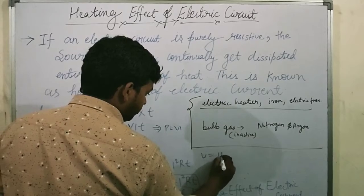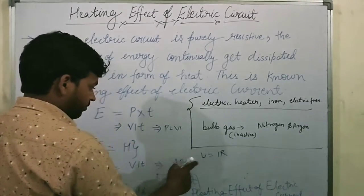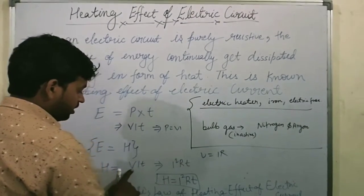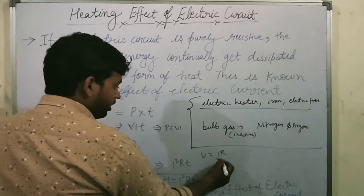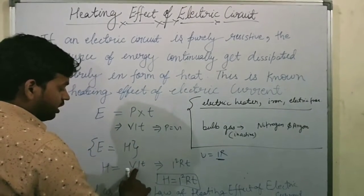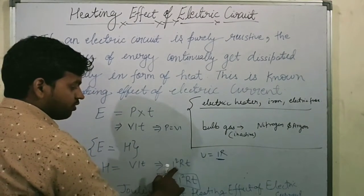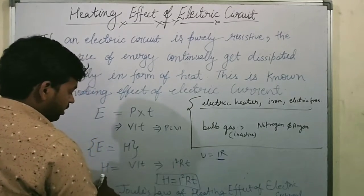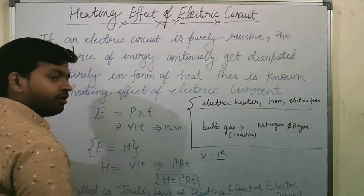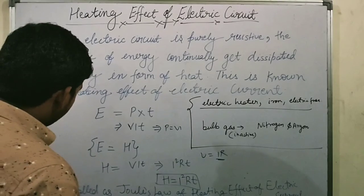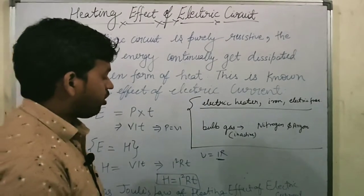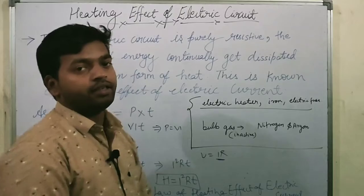And if we put the value of V, that is V equal to I R, we get H equal to I squared R T. This is called as Joule's Law of heating effect of electric current.